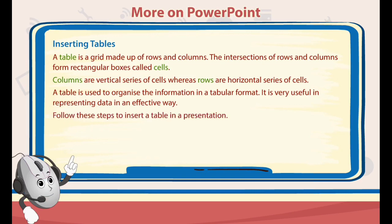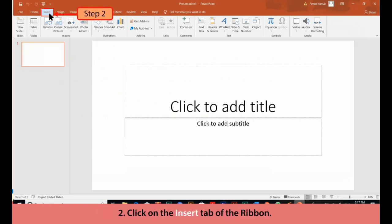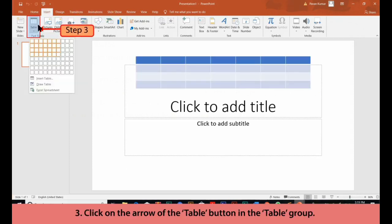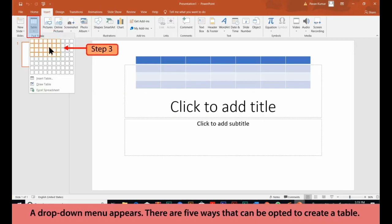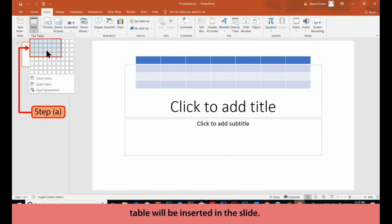Follow these steps to insert a table in a presentation. 1. Select the slide in which the table is to be inserted. 2. Click on the Insert tab of the ribbon. 3. Click on the arrow of the Table button in the Table group. A drop-down menu appears. There are 5 ways that can be opted to create a table. A. Highlight the rows and columns of the table in the drop-down grid and accordingly, a table will be inserted in the slide.